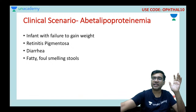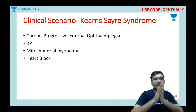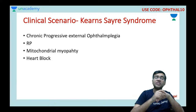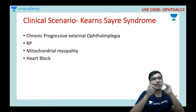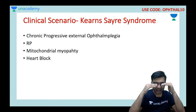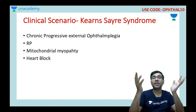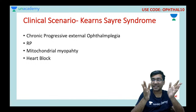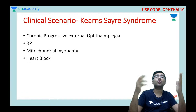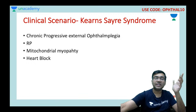Kearns-Sayre syndrome features chronic progressive external ophthalmoplegia (CPEO) with progressive bilateral symmetrical ptosis, difficulty in eye movement, and heart block. It is a mitochondrial myopathy. These patients must also be screened for retinitis pigmentosa.